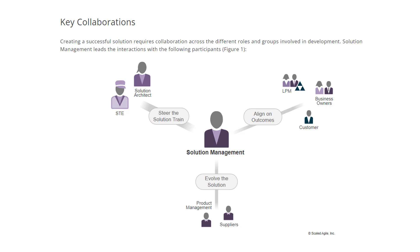Let us try to understand the key collaborations of Solution Management. Creating a successful solution requires collaboration across the different roles and groups involved in development. Solution Management leads the interactions with at least three types of participants. The first type is interacting with customers, business owners, and Lean Portfolio Management people to have alignment on the outcomes.